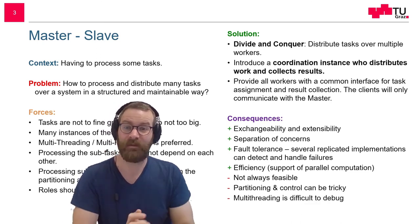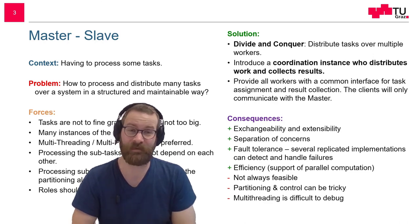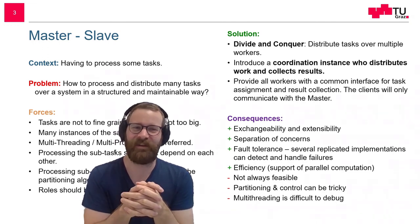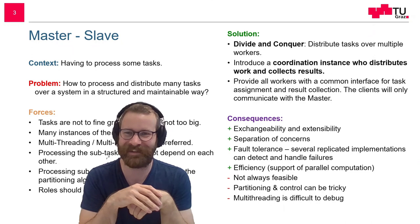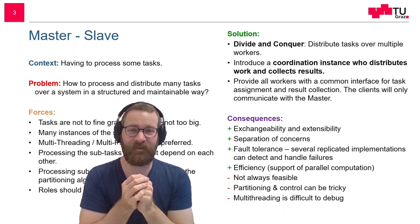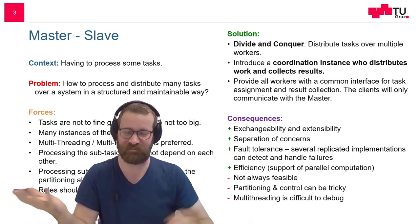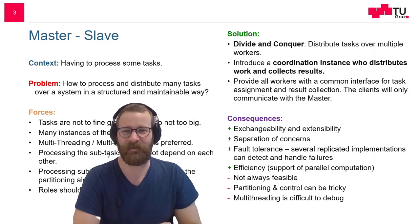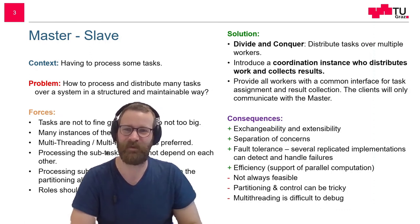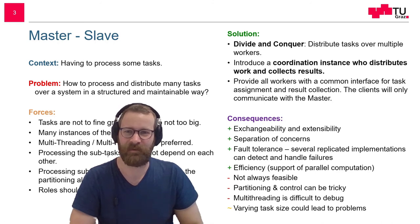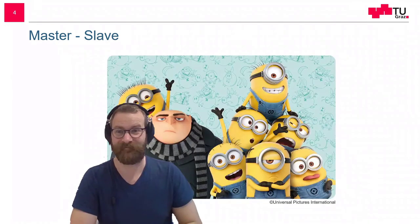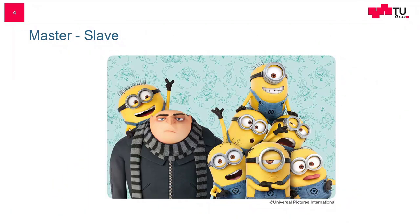Multi-threading is difficult to debug. Everyone who has programmed multi-threading programs knows the order is not deterministic, and oftentimes you have some effects which happen randomly. So it may be difficult to debug these applications. Varying task size could lead to problems — this I already mentioned before. That's the Master-Slave Pattern — see you next time!